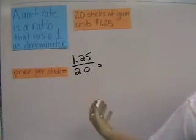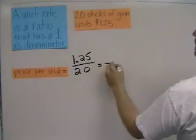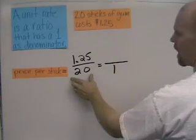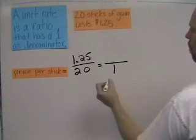And since a unit rate or a unit ratio is a fraction or ratio that has 1 as the denominator, we need somehow to get this denominator to become a 1.